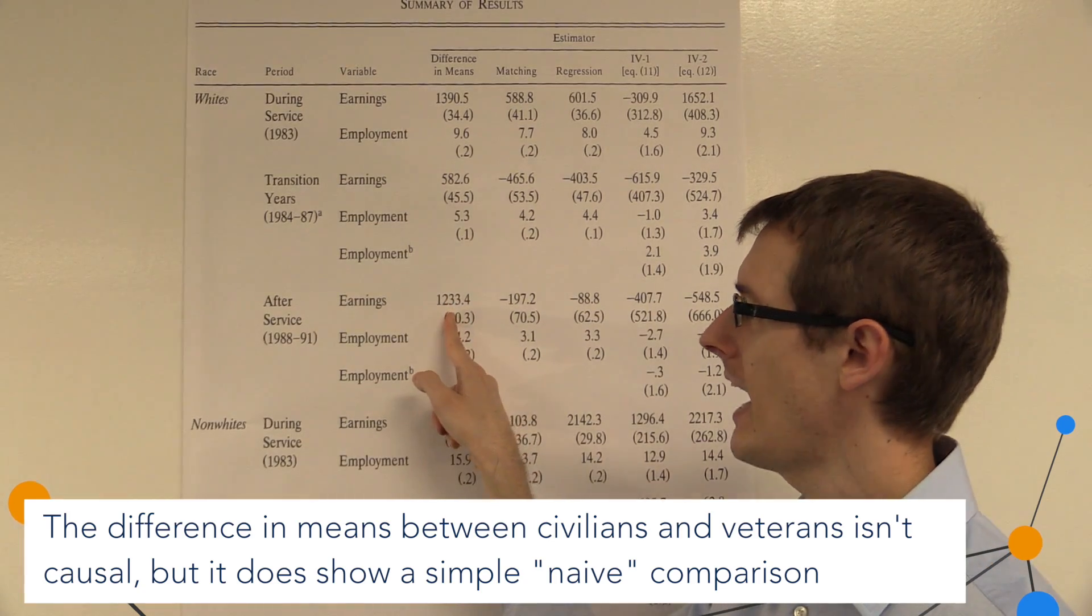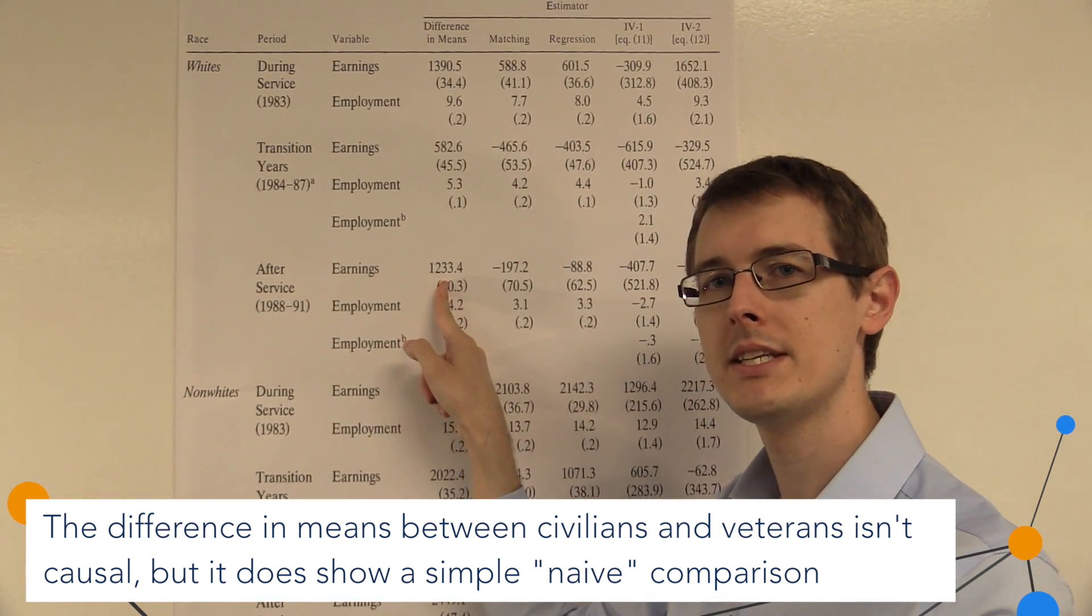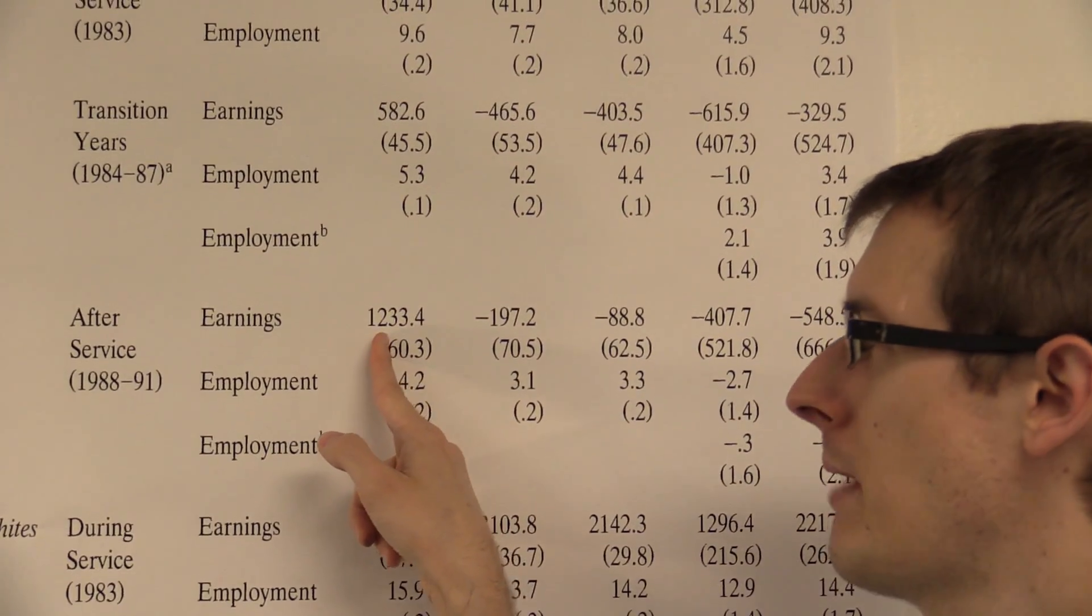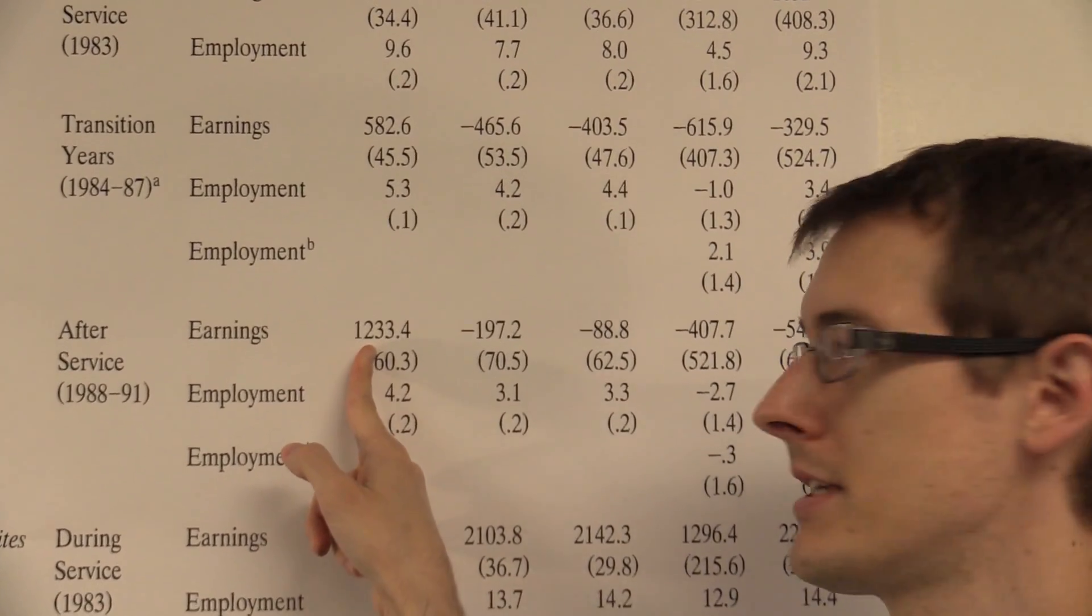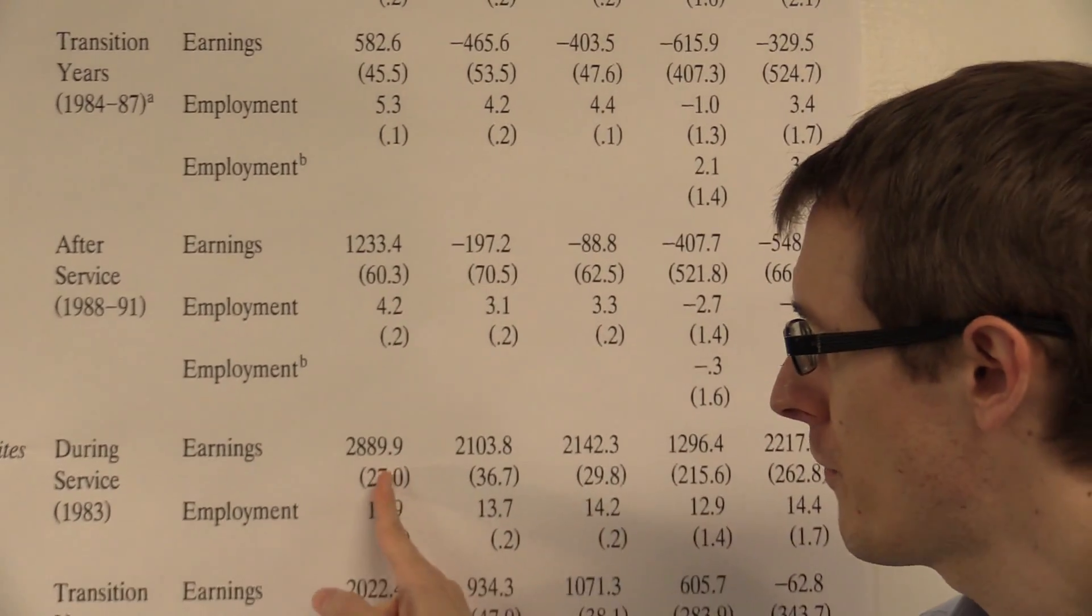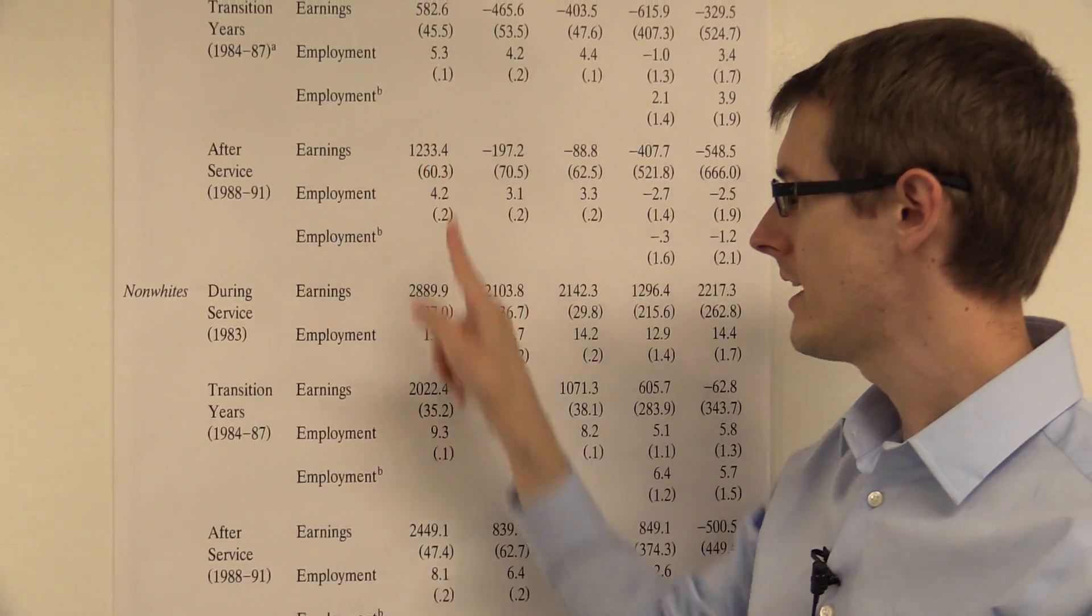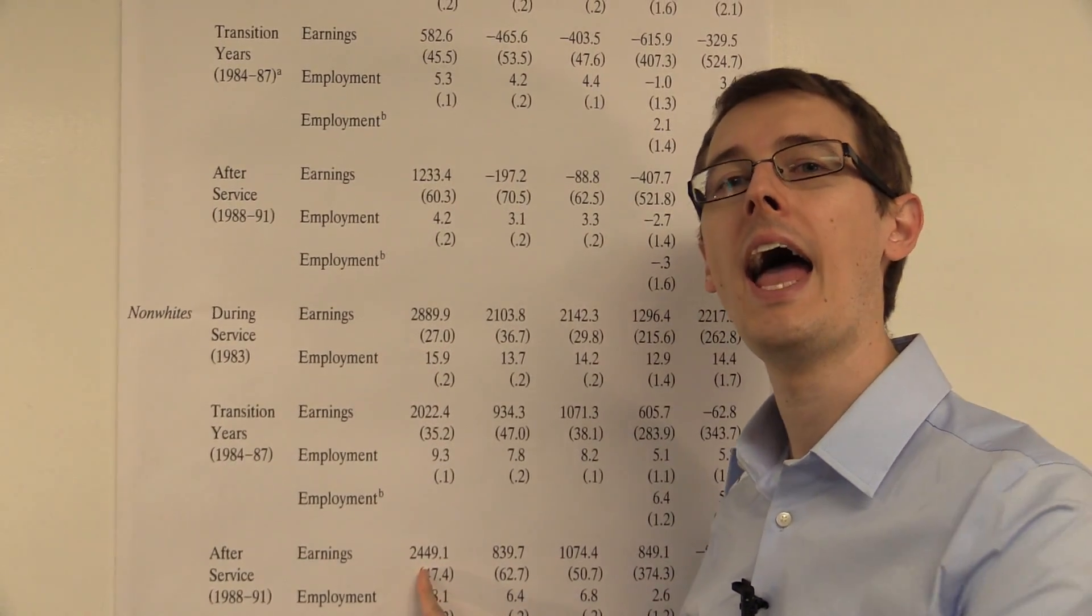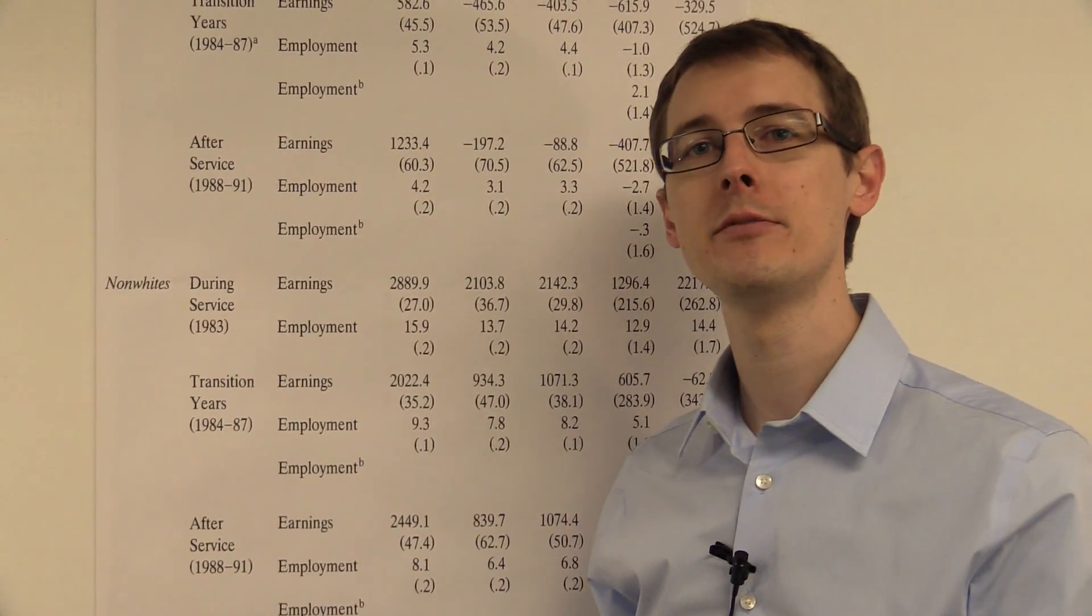So here we see exactly what we saw in the previous graph. People who enlisted in the military make more money. The difference is positive. So after service, they make about $1,200 more than the people who didn't enlist in the military. Same thing is true for non-whites, although they make significantly more compared to whites if they joined the military. So about $2,500 more after they've left the service. So that's just the difference in means.